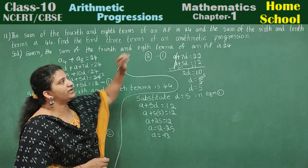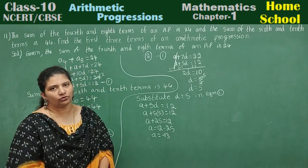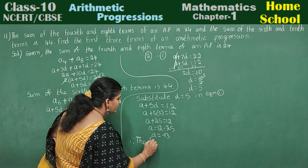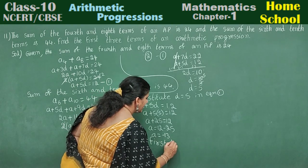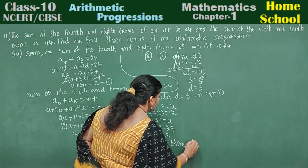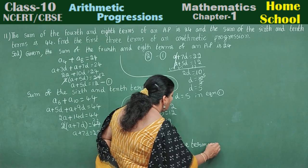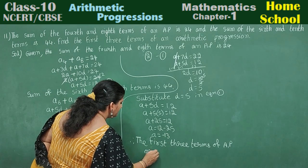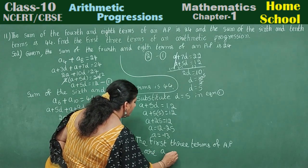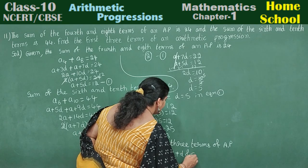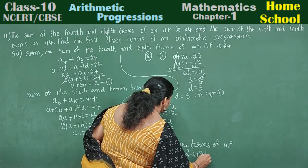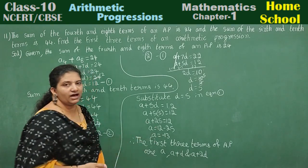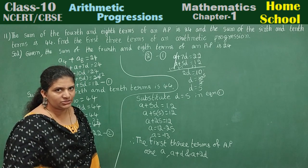Therefore, the first three terms of arithmetic progression are A, A plus D, and A plus 2D. Only three terms they asked. Or you can write A1, A2, A3 in general form.